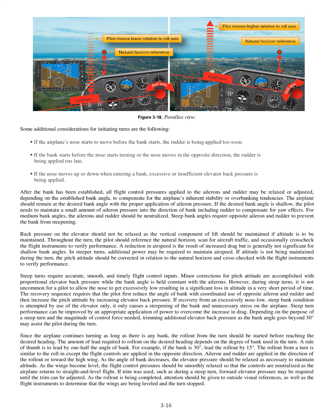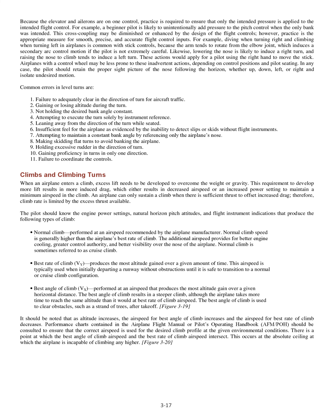The rollout from a turn is similar to the roll-in except the flight controls are applied in the opposite direction. Aileron and rudder are applied in the direction of the rollout or toward the high wing. As the angle of bank decreases, the elevator pressure should be relaxed as necessary to maintain altitude. As the wings become level, the flight control pressures should be smoothly relaxed so that the controls are neutralized as the airplane returns to straight and level flight. If trim was used during a steep turn, forward elevator pressure may be required until the trim can be adjusted. As the rollout is being completed, attention should be given to outside visual references as well as the flight instruments to determine that the wings are being leveled and the turn stopped.